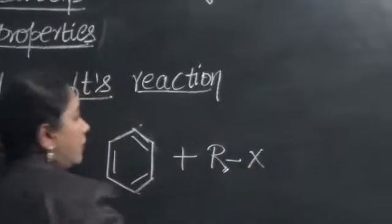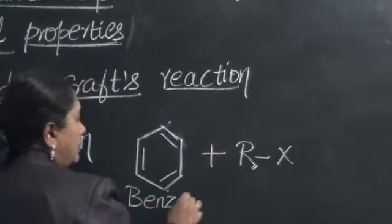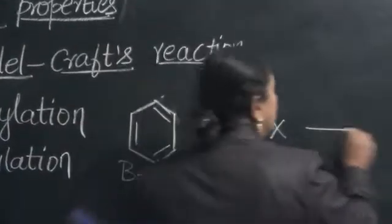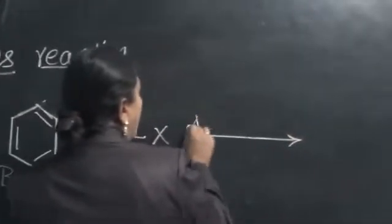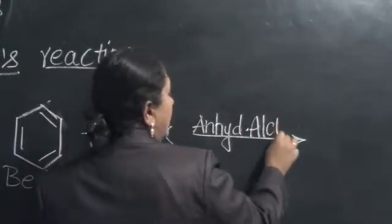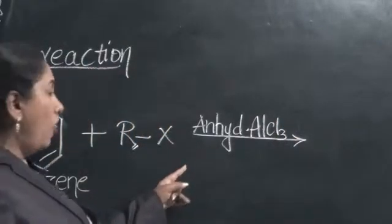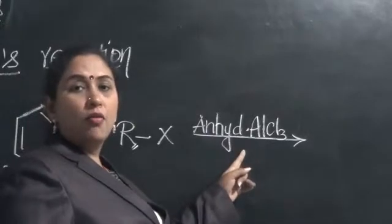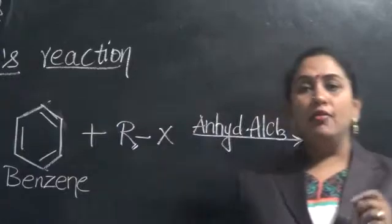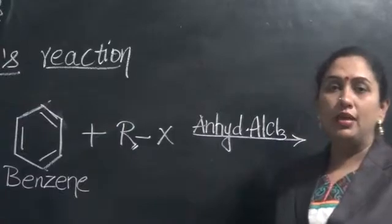R here represents alkyl group. So our starting material benzene is treated with alkyl halide in presence of anhydrous aluminum chloride as our catalyst. Students should remember that often the name of the catalyst is asked for one mark as name the catalyst of Friedel-Crafts reaction. In Friedel-Crafts reaction, the catalyst used is anhydrous aluminum chloride.